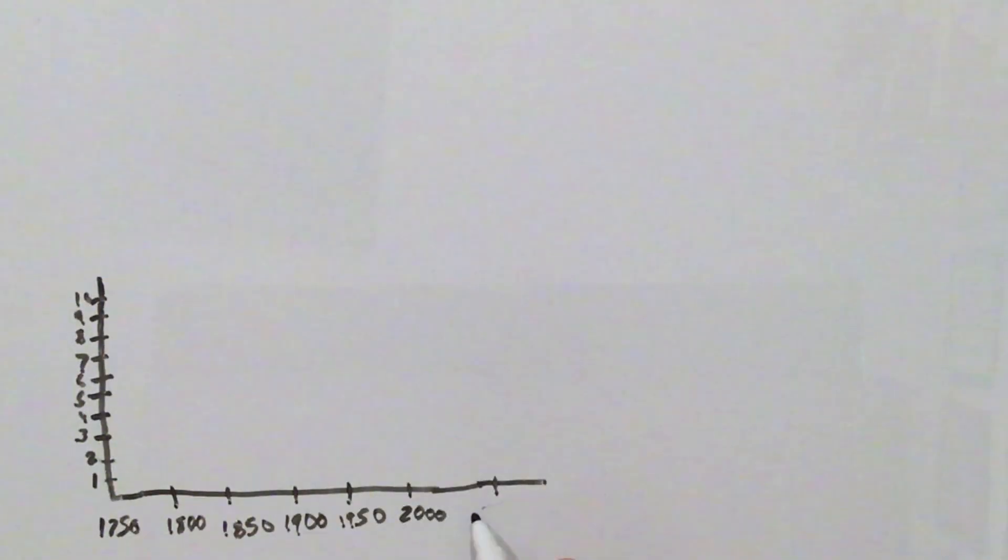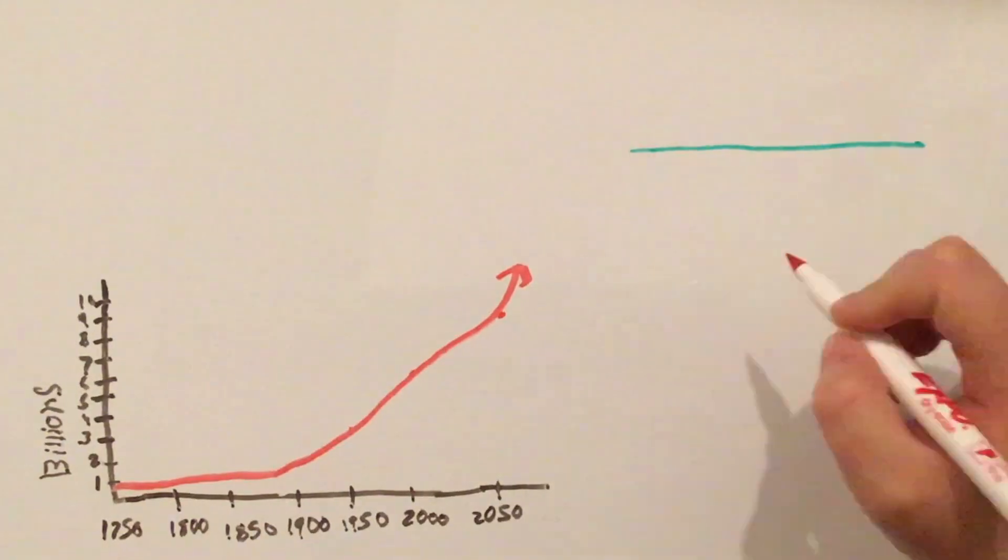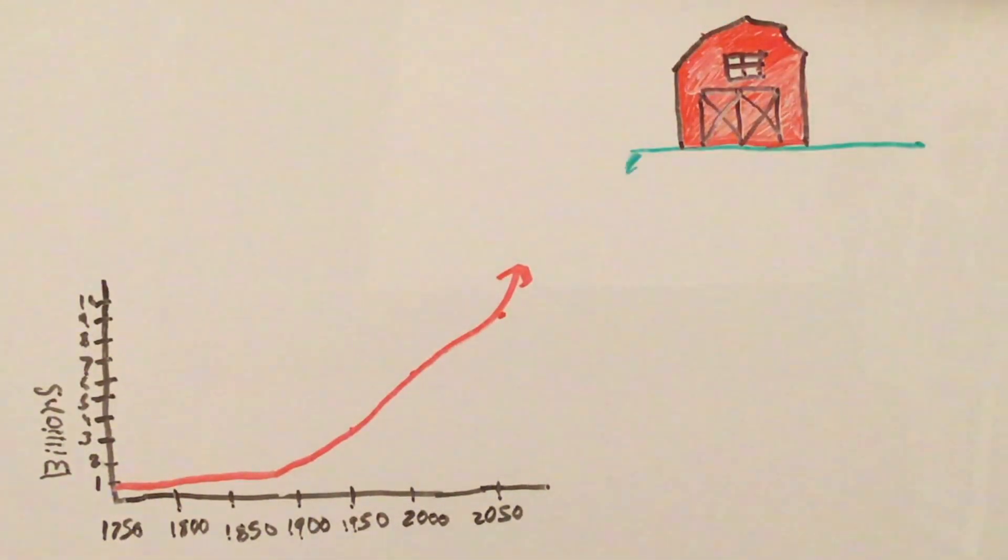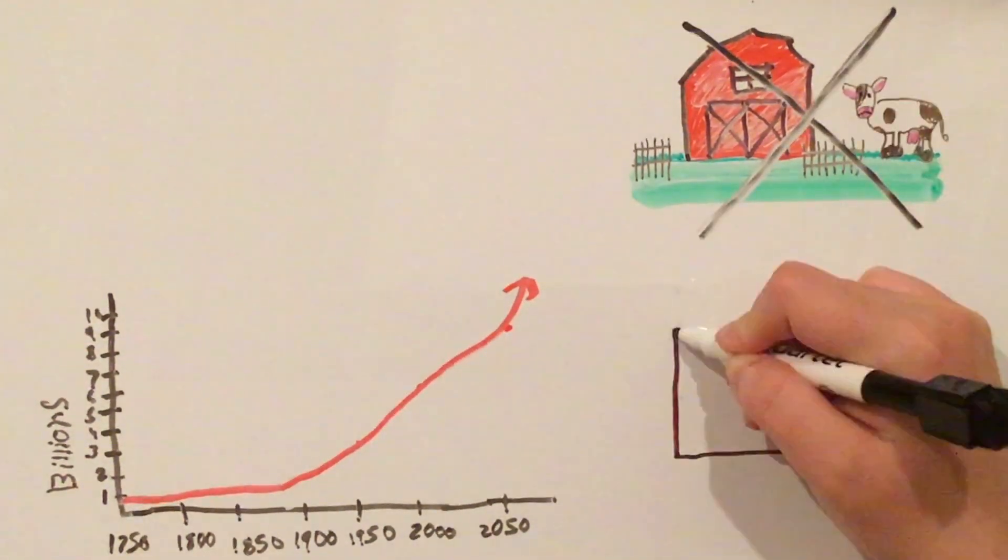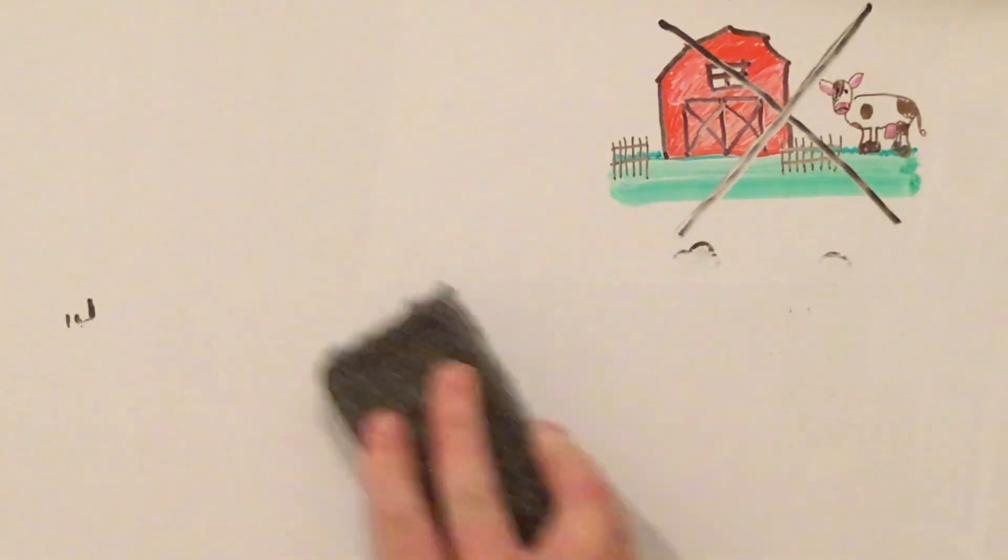The world population is increasing exponentially, and there are too many people to rely on natural methods of making food for most of us. So we are forced to rely on industrial techniques.